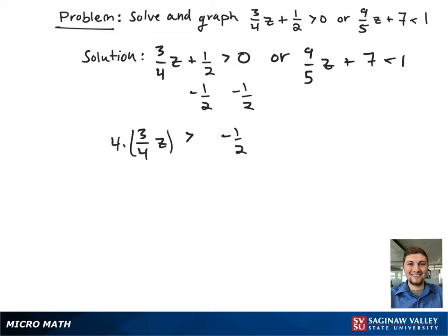To get rid of the fraction, we're going to multiply both sides by 4. This gives 3z is greater than negative 2.